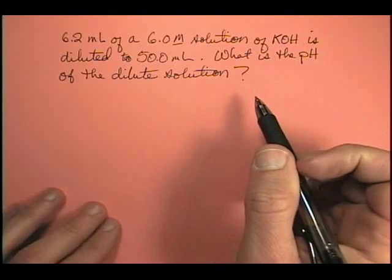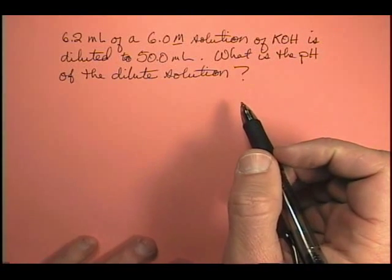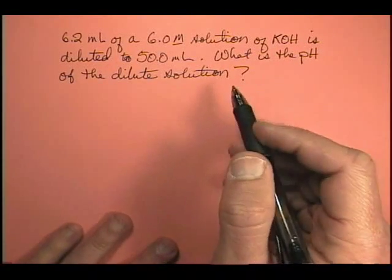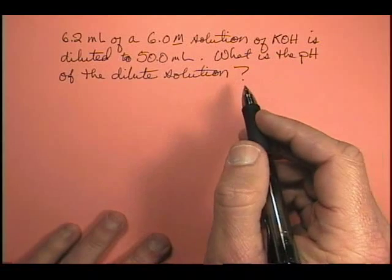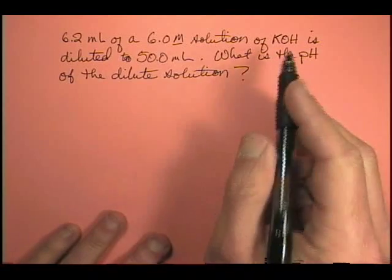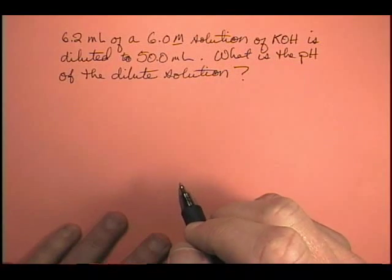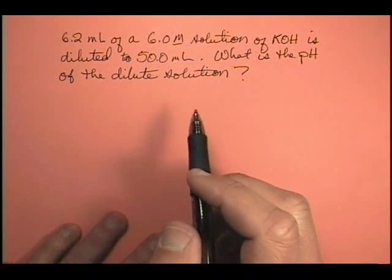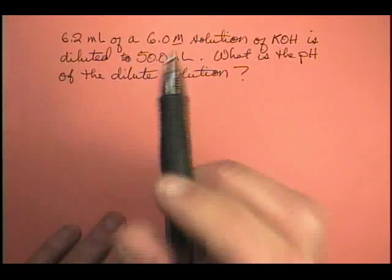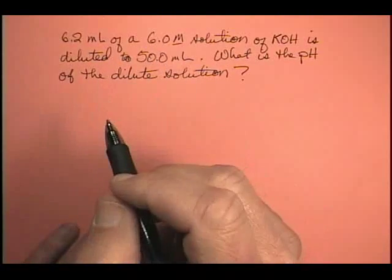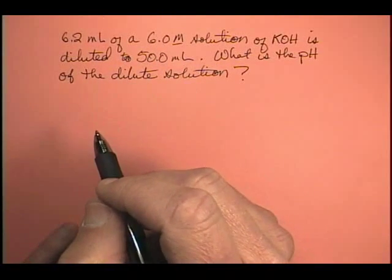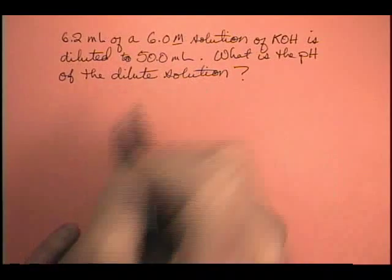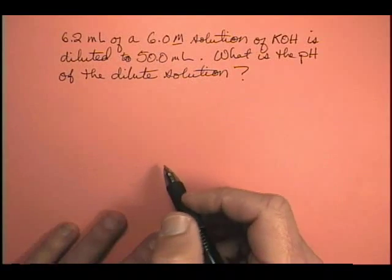There's going to be an additional step, because in order to figure out the pH, we're going to need to know the hydrogen ion concentration, not the hydroxide ion concentration. So we would expect, even though this is being diluted, that the pH is still going to be above 7, because this is a basic solution.